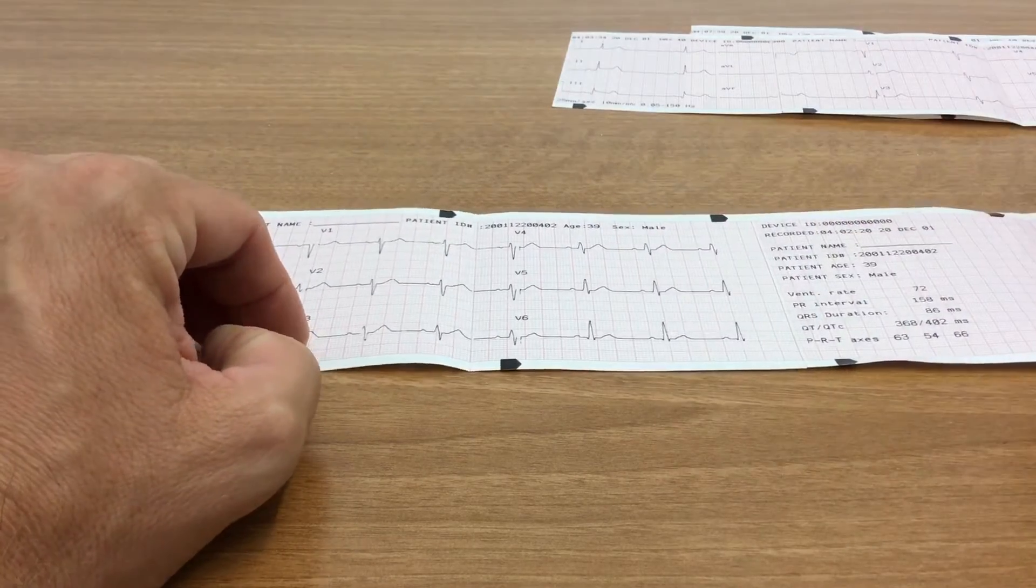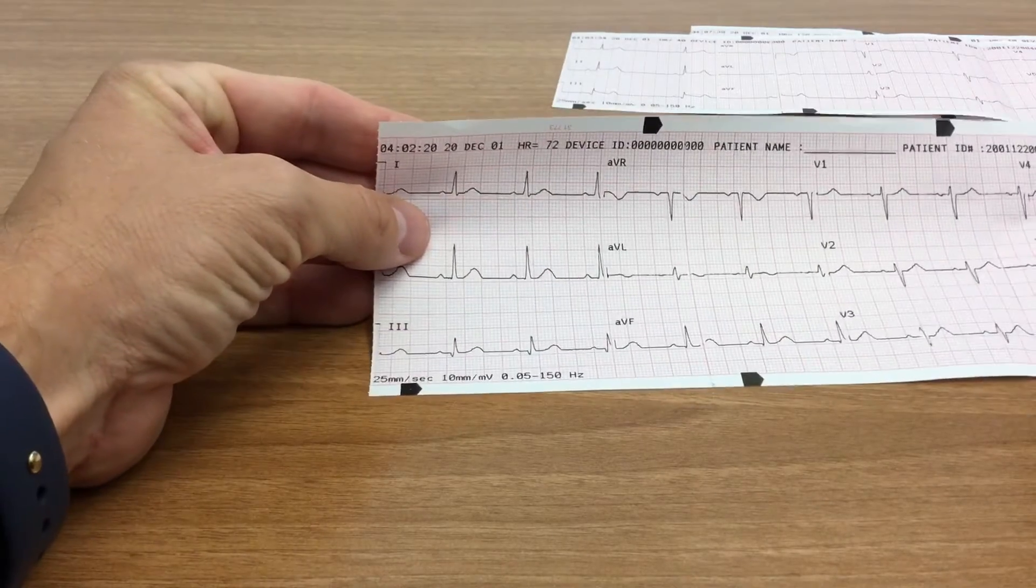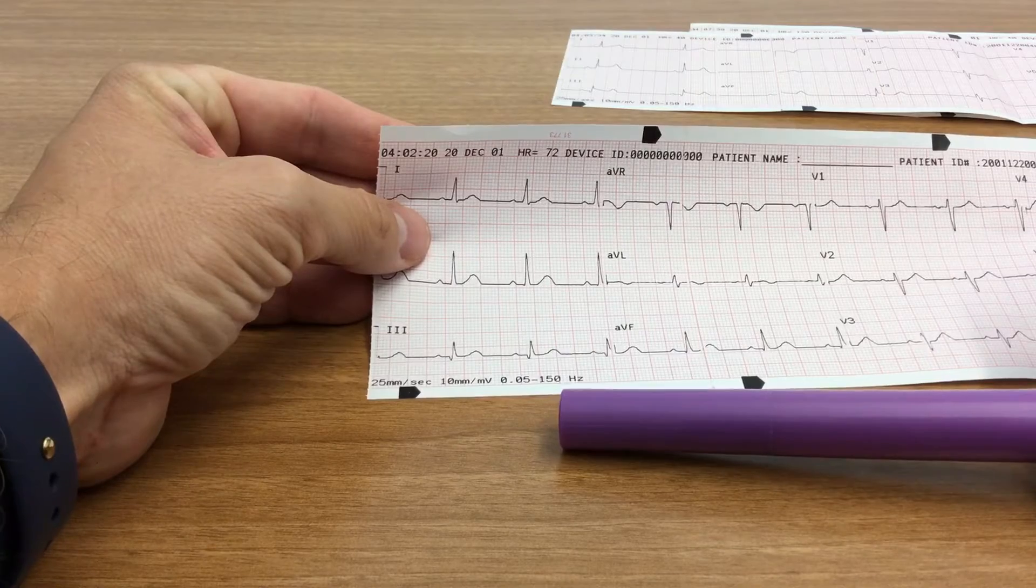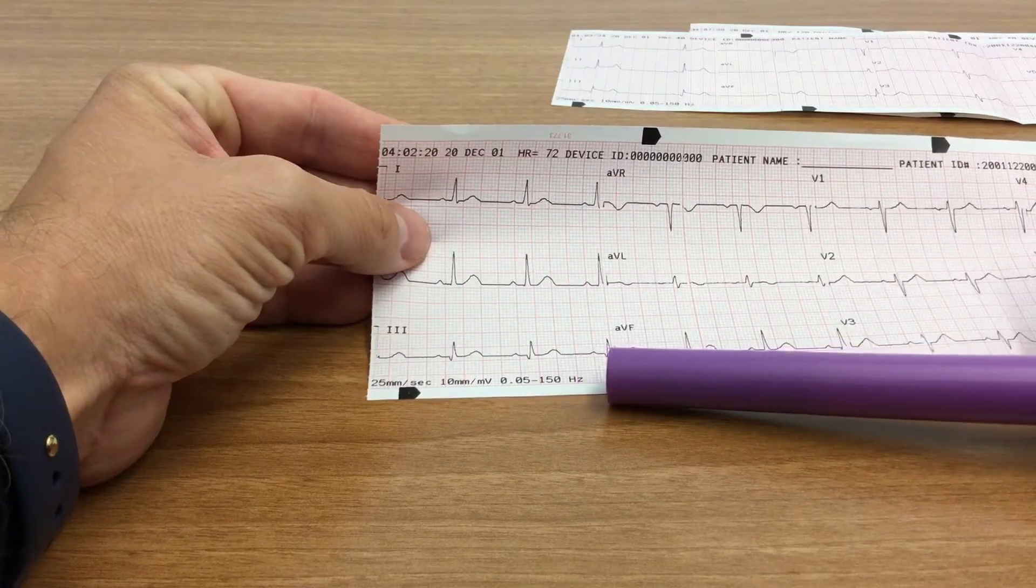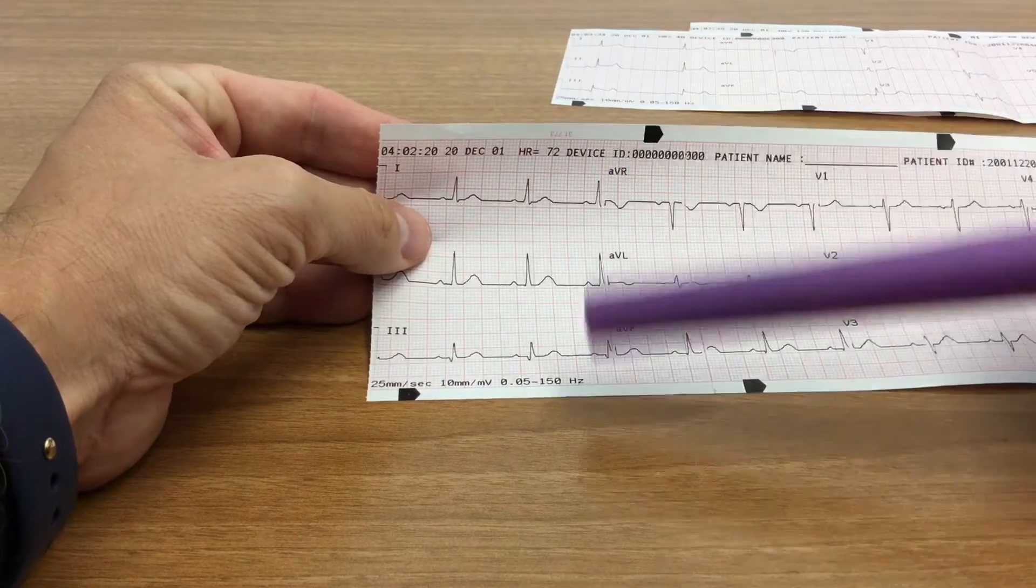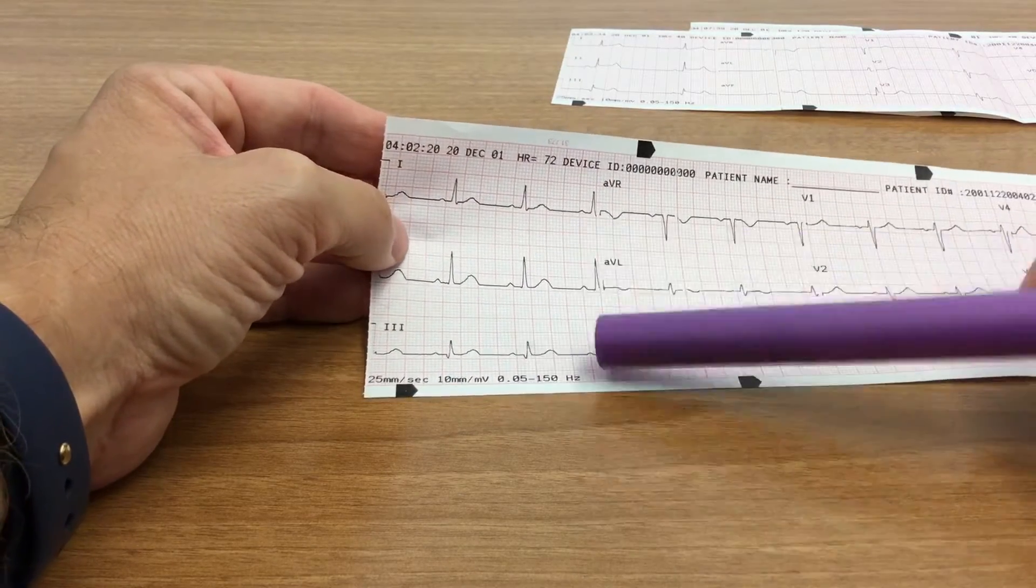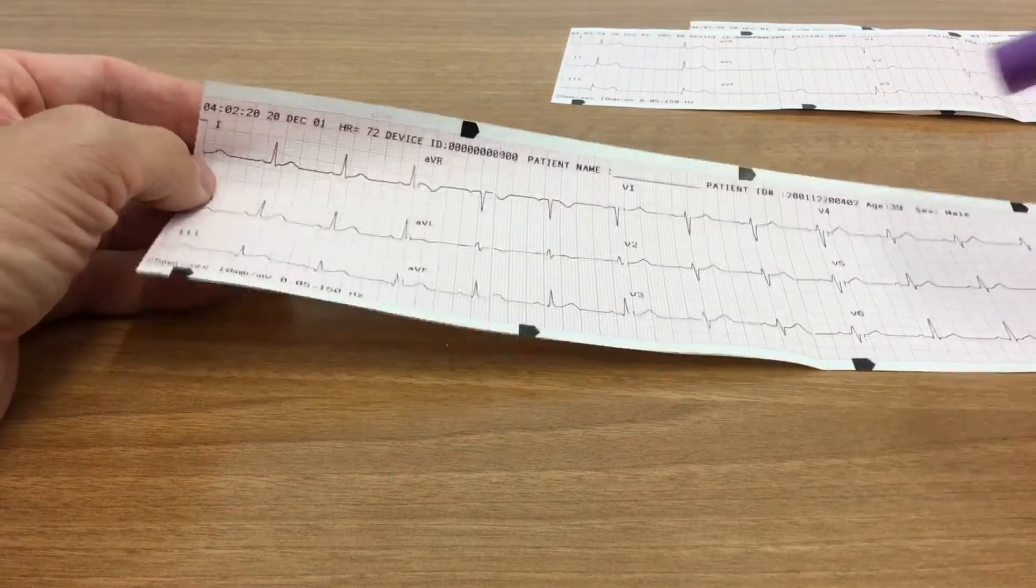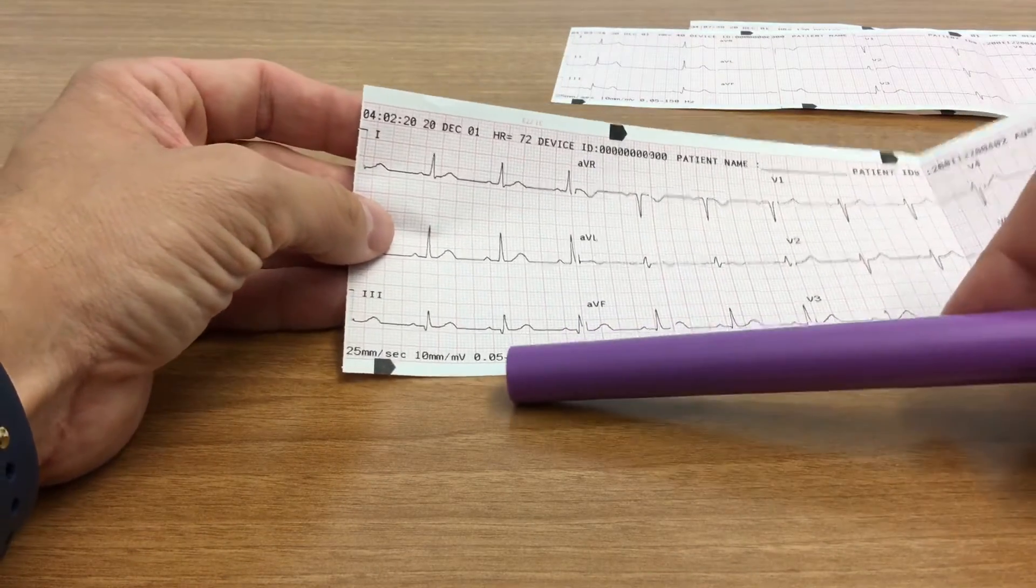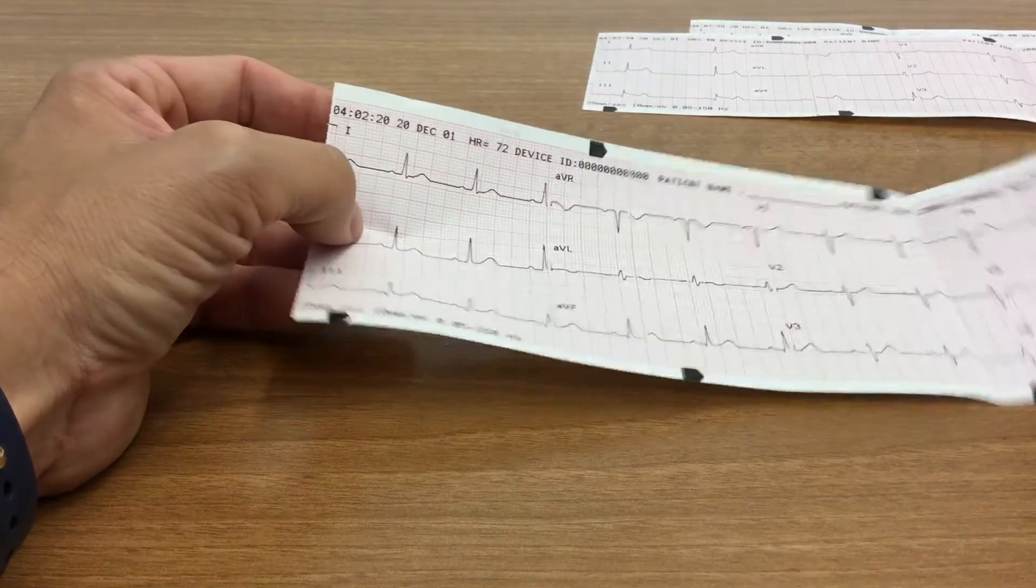And you can see down here that my filter is 0.05 to 150 hertz, which as you guys learned in class, those of my students, that this is a diagnostic quality ECG. Which is actually what you want to see when you run a 12-lead, you want to see that greater range represented instead of like 5 to 50 or 5 to 30 hertz.